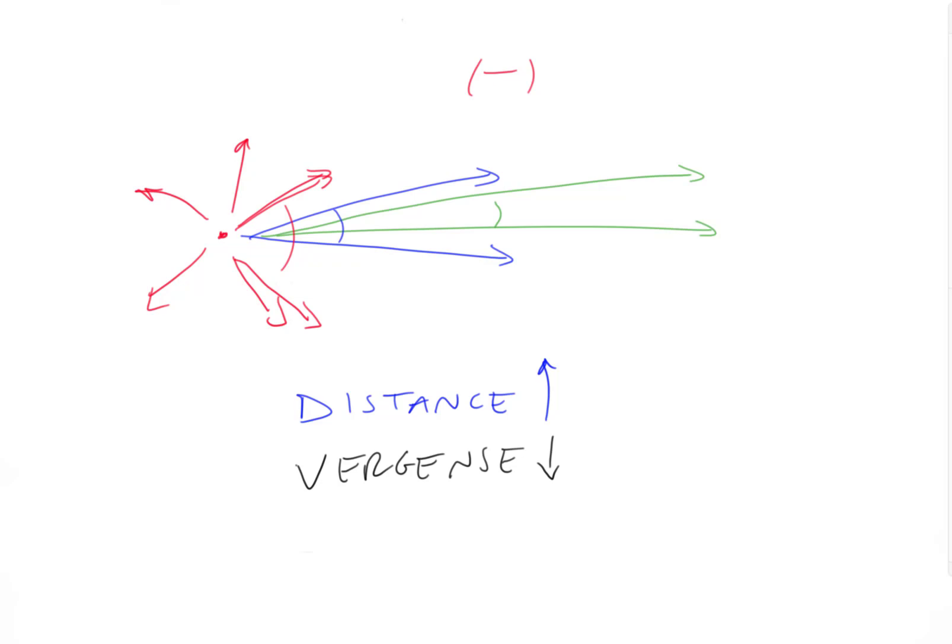So drag number one, light is created with a minus sign. Drag number two, there's an inverse relationship between distance and vergence. Oh, that should be a C, not less.